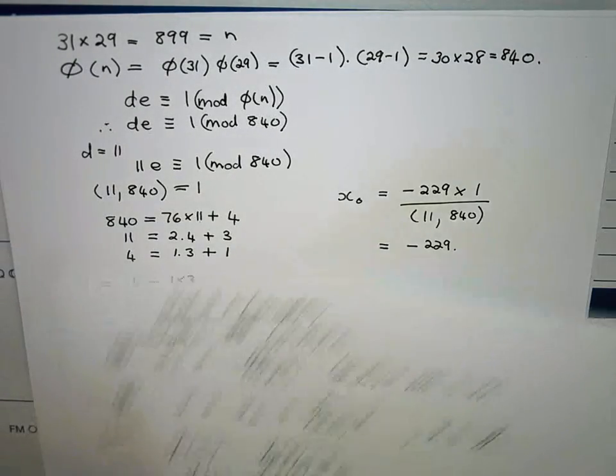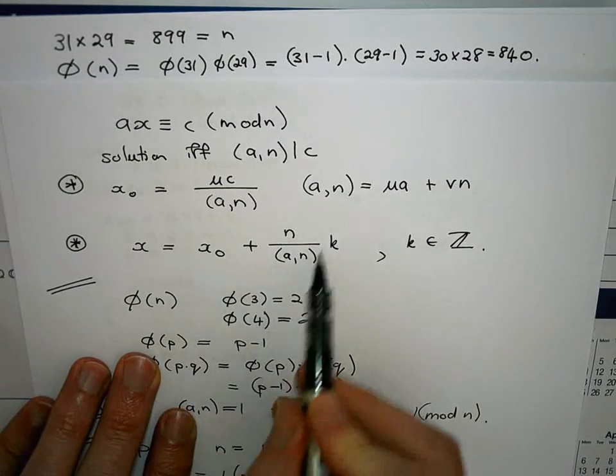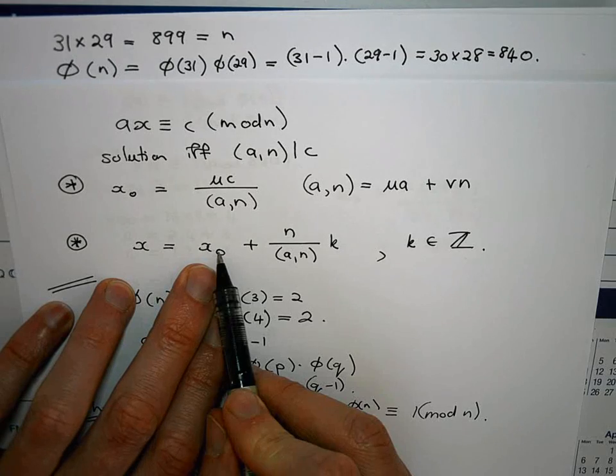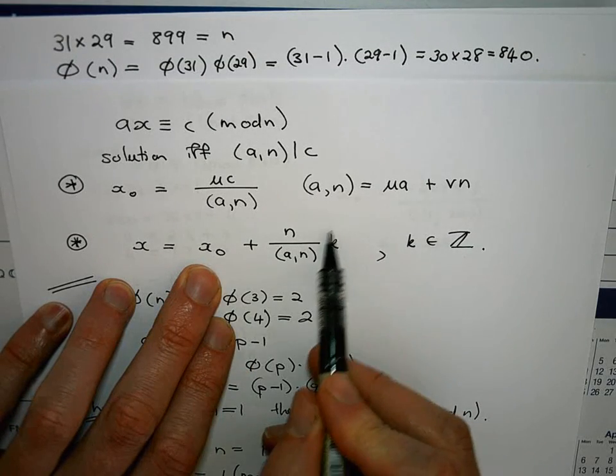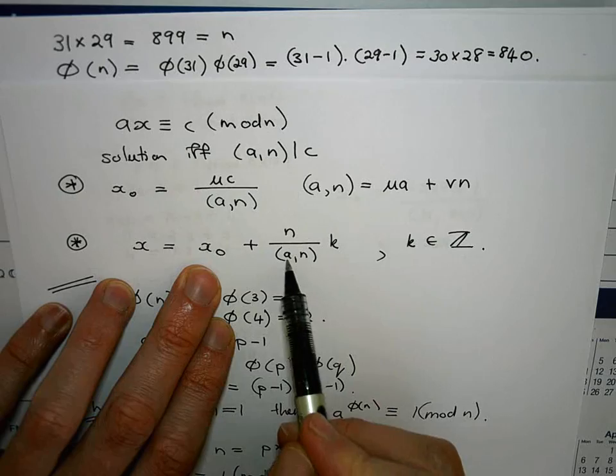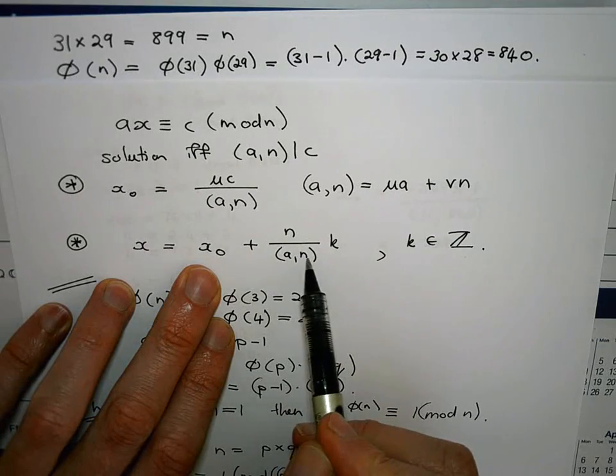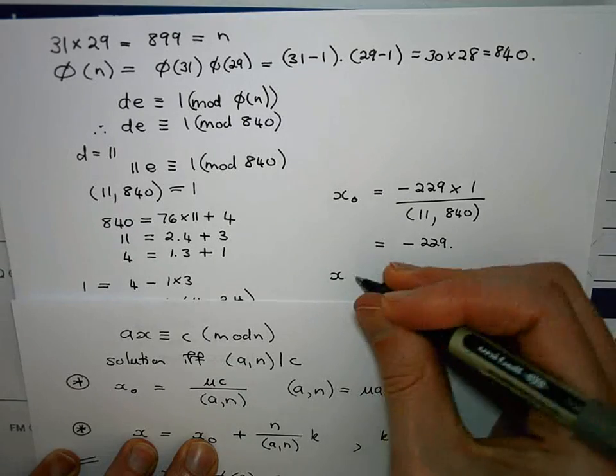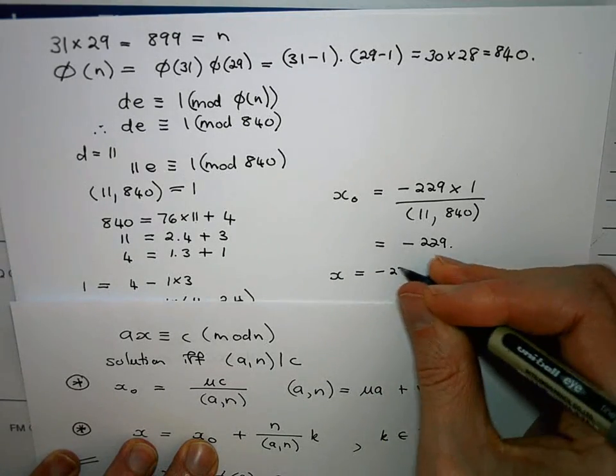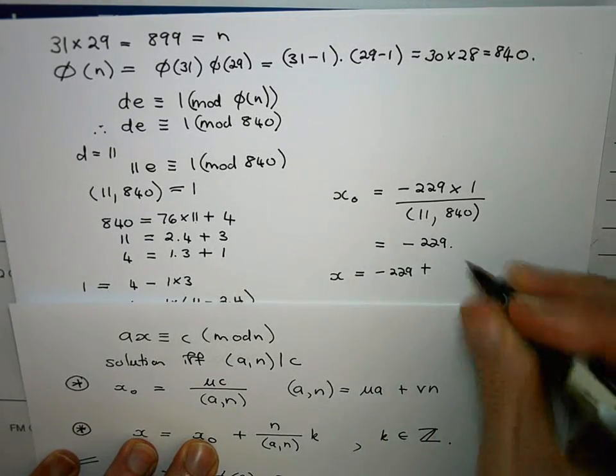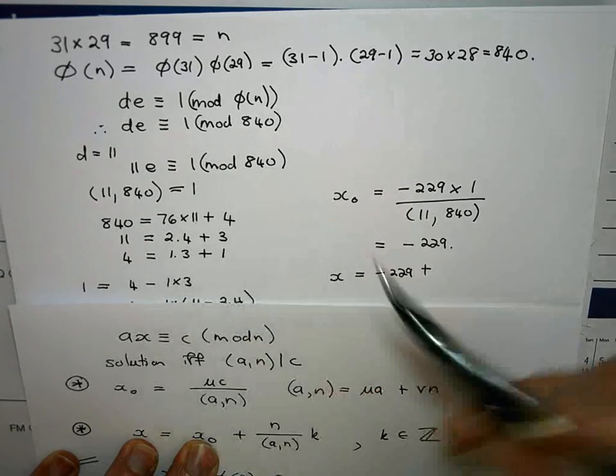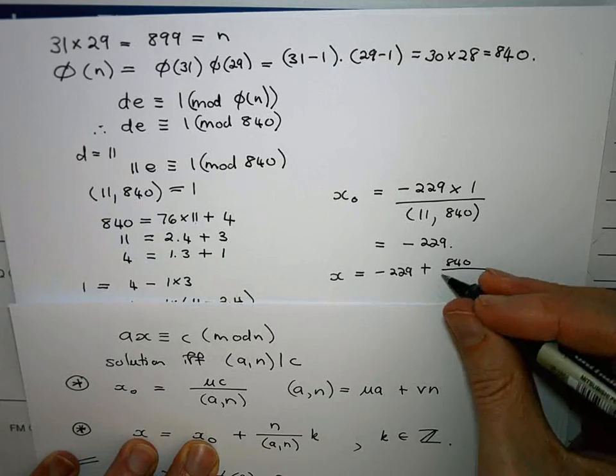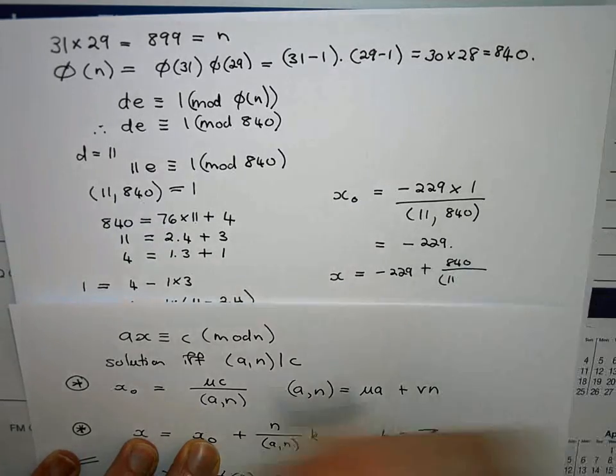So we knew that the general solution will be given by our specific solution plus any multiple of n divided by the GCD of a and n. So I can say that x is going to be equal to minus 229 plus, in this case our n is 840, divide that by the GCD of a and n.